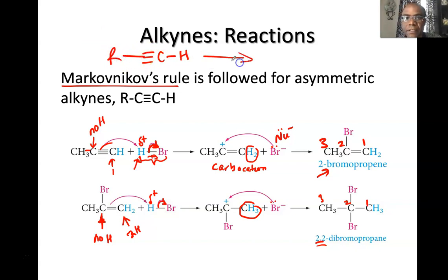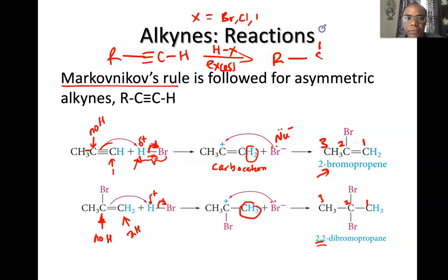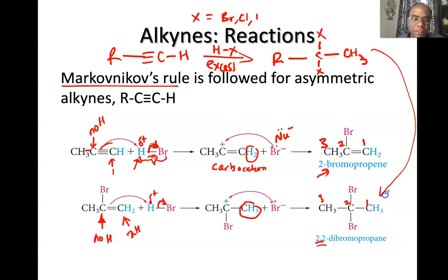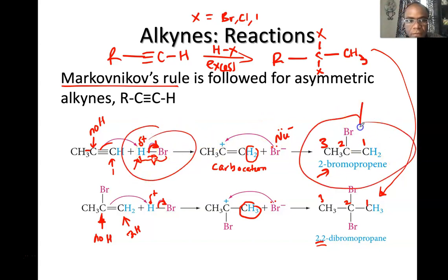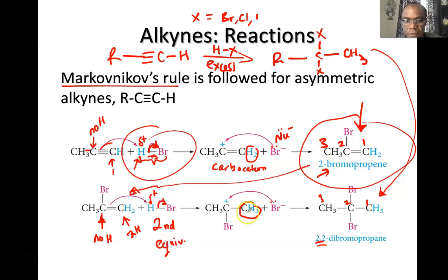Simply put, for a terminal alkyne reacting with HX — where X can be bromine, chlorine, or iodide — with one equivalent of HBr you stop at the vinyl halide (Markovnikov product). With excess HBr, two equivalents react and both halogens end up on the same carbon, giving a geminal dihalide product. This illustrates how one equivalent versus excess reagent controls whether you stop at the alkene stage or go all the way to the geminal dihalide.